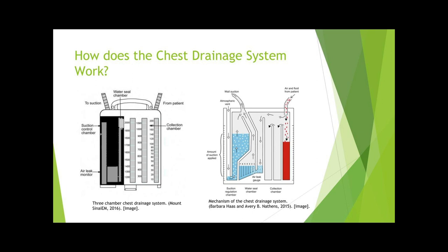Air cannot re-enter the pleural cavity during inspiration due to the pressure in the chamber. The last chamber is the suction chamber, which may use a wet or dry suction mechanism. It is attached to continuous external suction to remove air or fluid, or it can be placed on water seal where no active suction is applied. The height of water in a wet system indicates the amount of suction applied. In a dry system, suction is controlled by a dial. Suction pressures are typically between negative 10 and negative 40 mmHg; if suction is used, it is typically set to negative 20 mmHg. However, it is not necessary for suction to be applied for the system to work — fluid will still drain without suction.